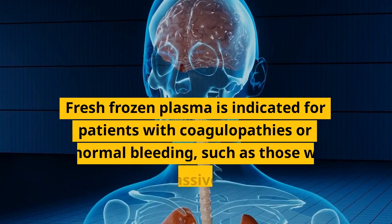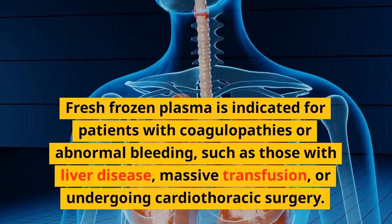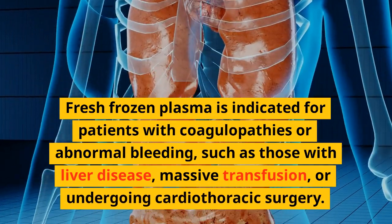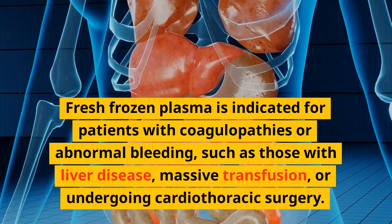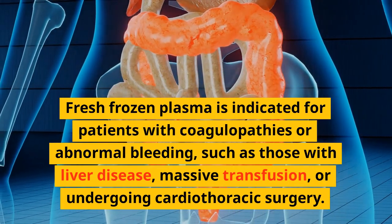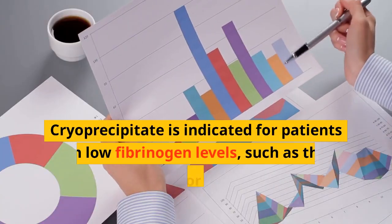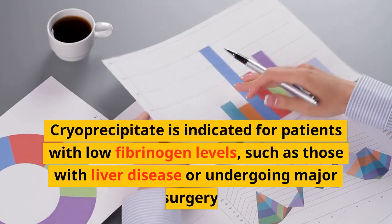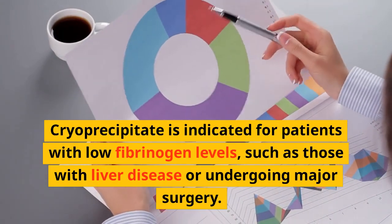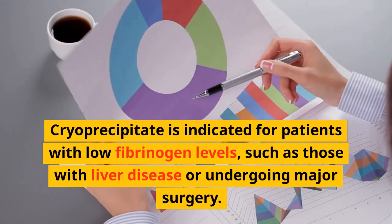Fresh frozen plasma is indicated for patients with coagulopathies or abnormal bleeding, such as those with liver disease, massive transfusion, or undergoing cardiothoracic surgery. Cryoprecipitate is indicated for patients with low fibrinogen levels, such as those with liver disease or undergoing major surgery.